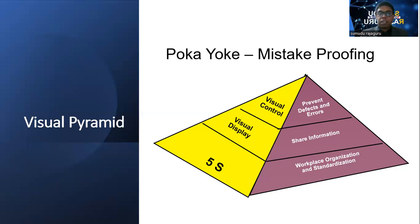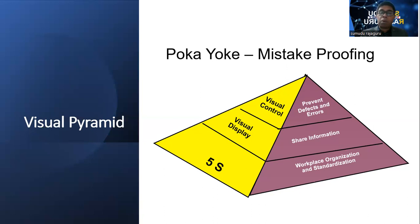When I summarize the visual pyramid concept, there are mainly three elements: 5S, visual display, and visual control. From 5S, workplace organizing and standardization happen. Through visual displays, we can share information, and by using visual control, we can change people's behavior. There is also the concept called Poka-yoke, which means mistake-proofing. If we set up our organization by implementing 5S, visual displays, visual controls, and at least 10 to 20% of mistake-proofing-related mechanisms, then that factory we call a visual factory.